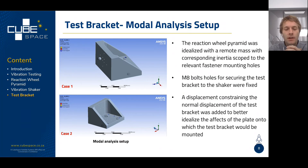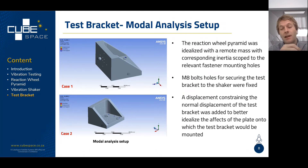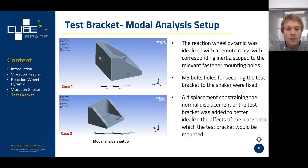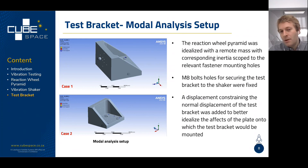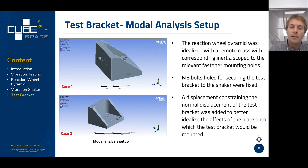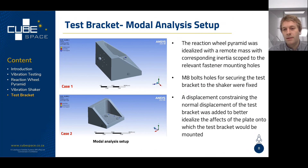Moving on to the analysis — since we're interested specifically in the vibration test bracket, we have not modeled the reaction wheel pyramids in great detail. We've idealized it as a remote mass with the correct inertia properties, scoped to the mounting holes used to secure the actual reaction wheel pyramid to the bracket. The M8 holes securing the bracket to the vibration adapter plate have been fixed. To idealize the support the plate would provide to the base of the test bracket, we've applied a displacement constraint, which we found to be a better approximation than simply fixing the M8 holes.